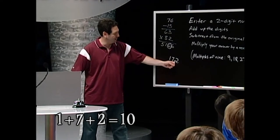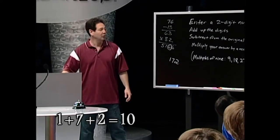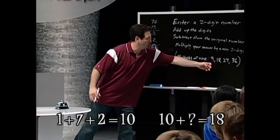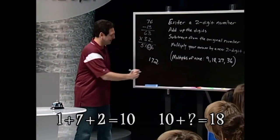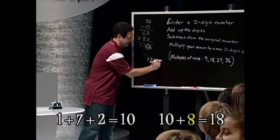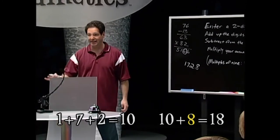So when Chris gave me these numbers, 1 plus 7 is 8 plus 2 is 10. It was already greater than 9, so I had to go up to 18. So I knew the missing number was an 8. Because it either has to add up to 9 or 18.